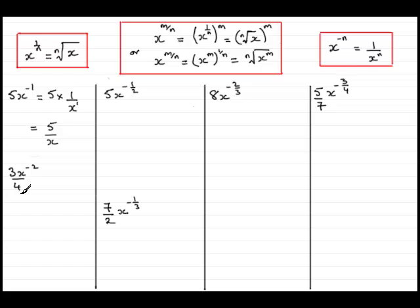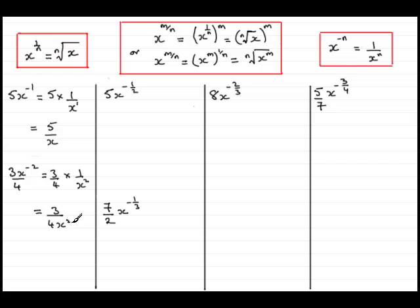In this next example I've introduced a number in the denominator, but it's still much the same. We've got 3x to the power minus 2 all over 4. Think of it as 3 quarters times x to the minus 2. And x to the minus 2 using this rule would be 1 over x squared. Multiplying the two fractions together you've got 3 times 1 which is 3, all divided by 4 times x squared, which is 4x squared. So if you had 3x to the minus 5 over 4 — same kind of thing — 3 quarters times 1 over x to the power 5, giving 3 over 4x to the power 5.